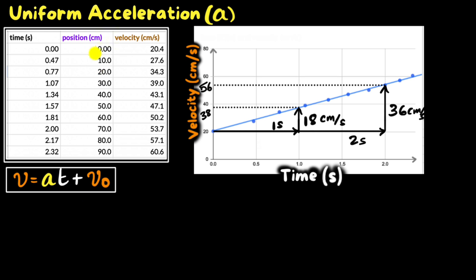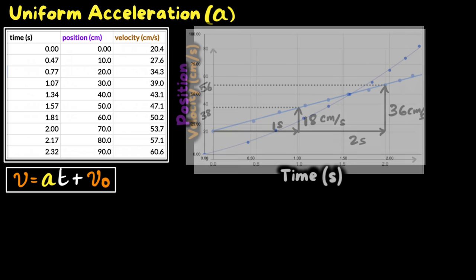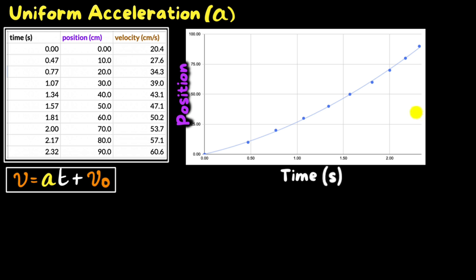Let's build another model. This time, let's ask: what is the connection between position and time? We can plot a graph of position versus time — position is the dependent variable, time is the independent variable. The graph we get looks like this. What's interesting is that this is not a linear graph — it's a quadratic graph. We call this a parabola. One way to build the model is to write an equation for a parabola, but here's another way to think about it.